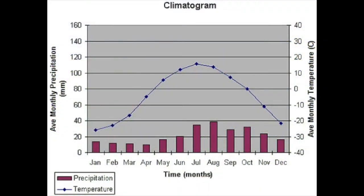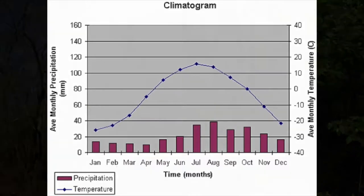The climate of a tropical dry forest is both seasonal and tropical, with an average temperature that is more than 65 degrees Fahrenheit, which is 20 degrees Celsius, and the average rainfall is between 40 to 100 inches.